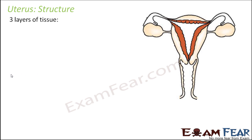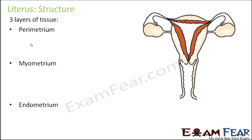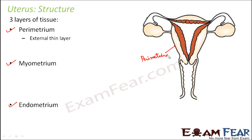The uterus has three layers of tissue: the perimetrium, myometrium, and endometrium. The perimetrium is the external thin outermost layer made up of loose connective tissue, which keeps the uterus distinct from other parts of the body.